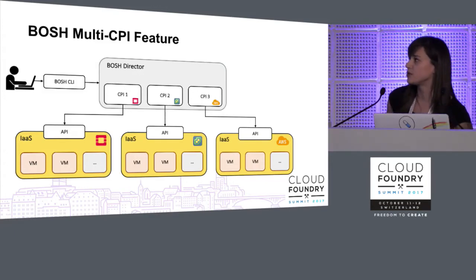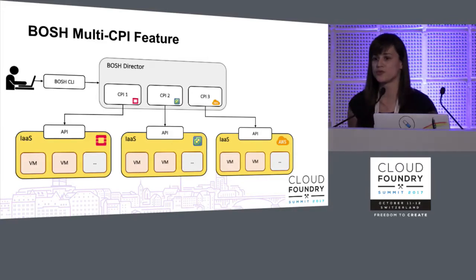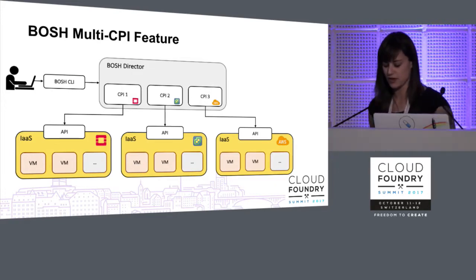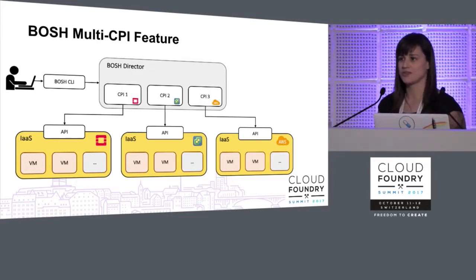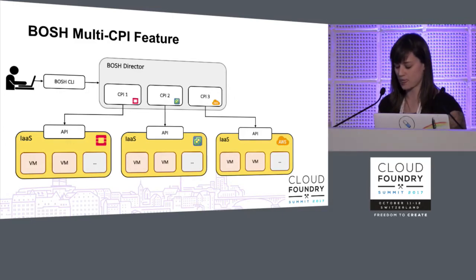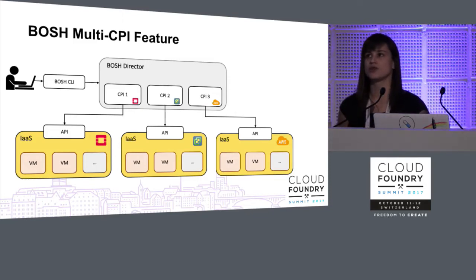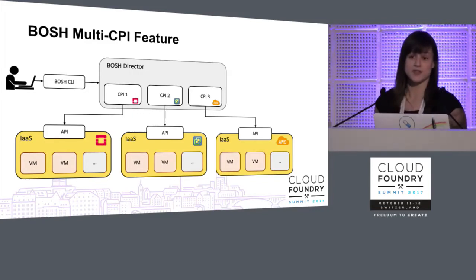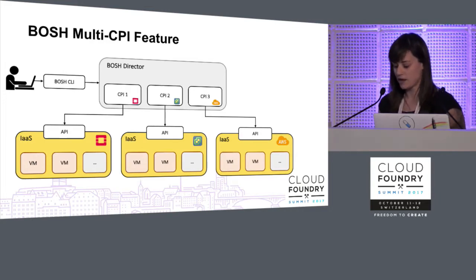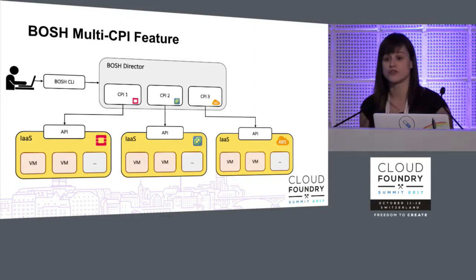I don't want to go too deep into this topic, but it's really an enabler for this story. All this magic that BOSH allows us to do comes from the core concept of a cloud provider interface. In the past, the BOSH director wasn't able to handle multiple CPI configurations at the same time — it was only able to talk to one configured infrastructure provider. When we started our journey in the middle of last year, we quickly realized that we wanted to talk to different infrastructure providers from the same BOSH director at the same time.